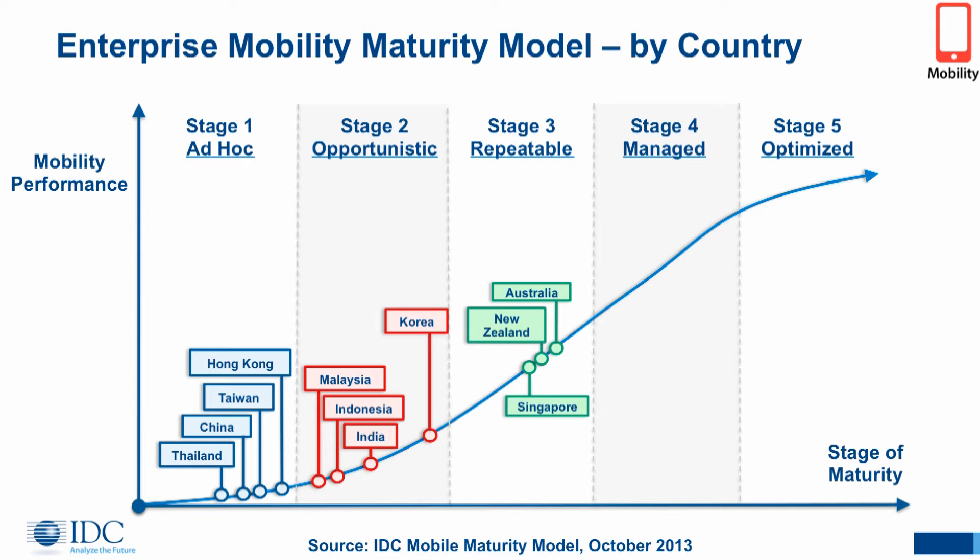In the opportunistic phase, these are the ones moving forward a little bit more and starting to roll out more types of solutions. Malaysia and Indonesia are starting to drive it in ASEAN, India is starting to leverage the technology as well, and Korea, still a little behind the leaders, is starting to make some progress.